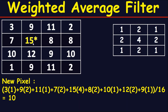With the center aligned on 15, seven will be under two, three will be under one, nine will be under two, eleven will be under one, ten will be under one, and twelve will be under two.